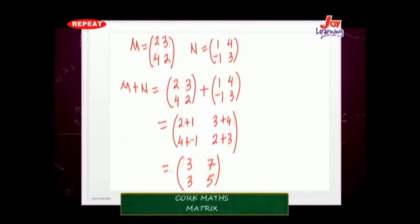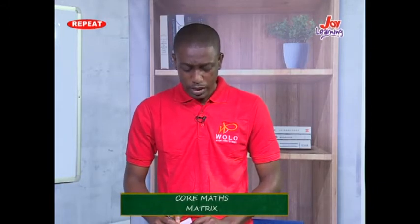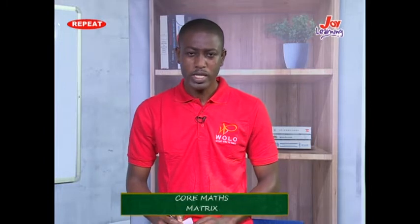The next question: if P is a matrix with entries 3, negative 1, 2, and negative 4, and Q is another matrix with entries negative 1, 5, 3, and 2, what will be the matrix 3P minus Q?